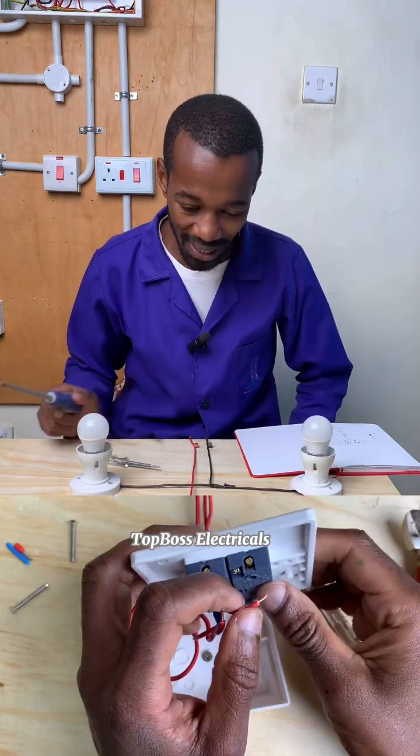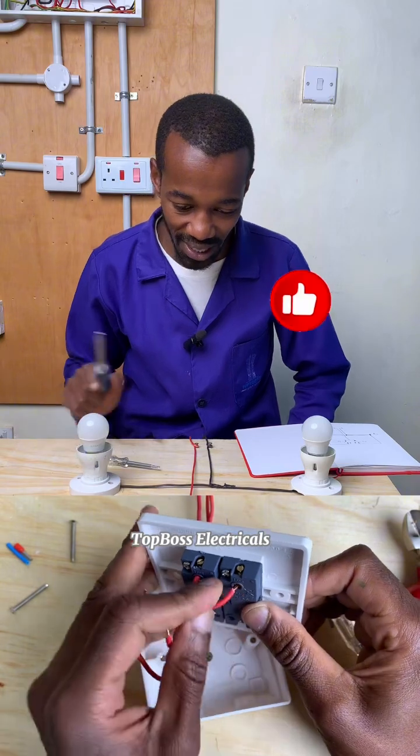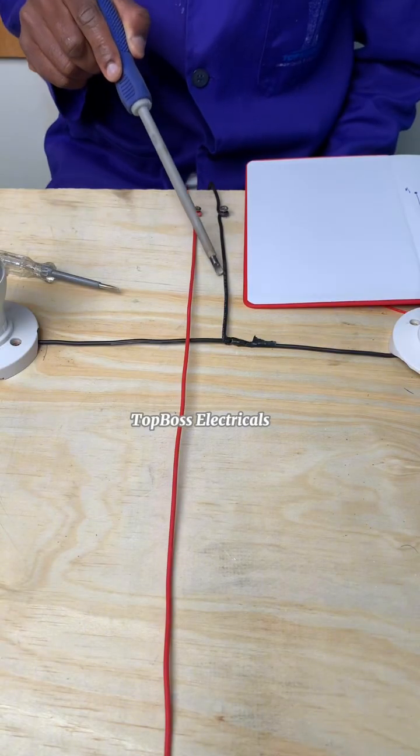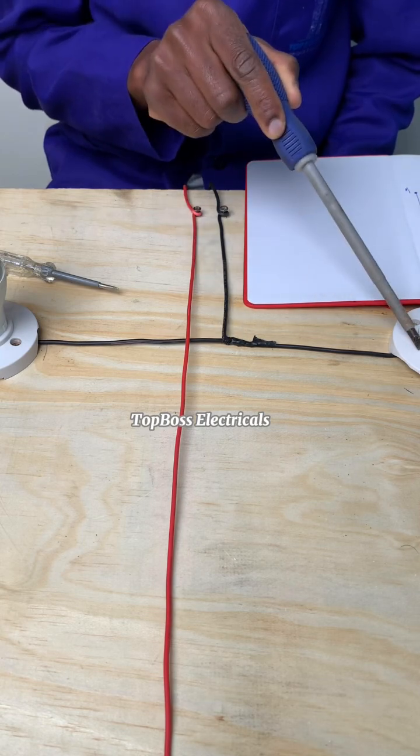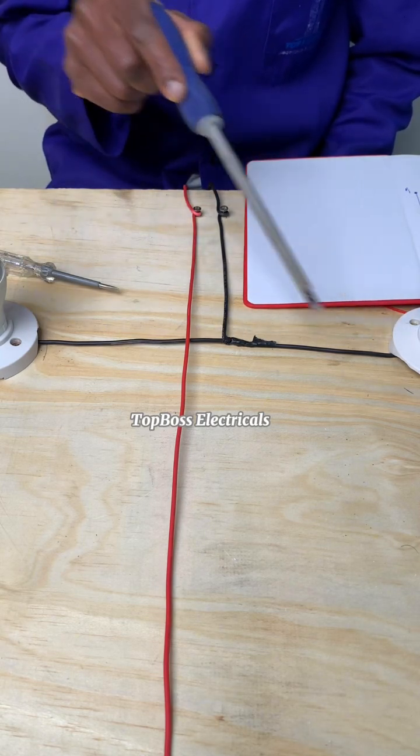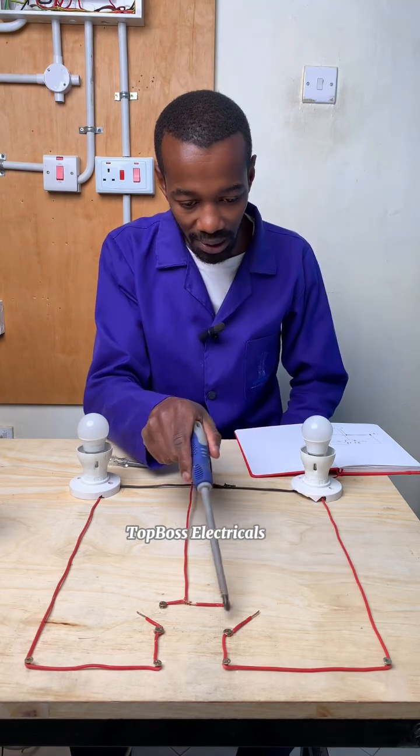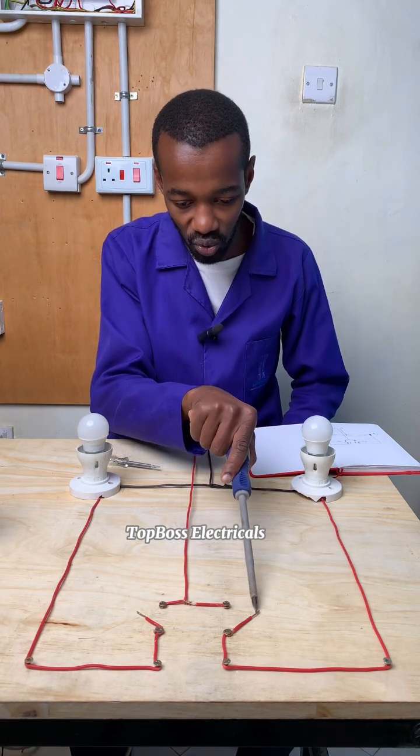Fed by one line, the phase supply or conductor, the neutral flows straight to the bulbs - bulb B1 and B2. Now from here, one side of the bulb goes to the switch.